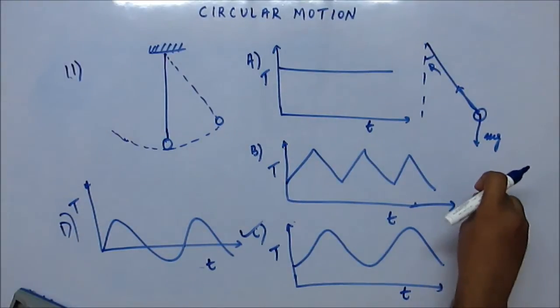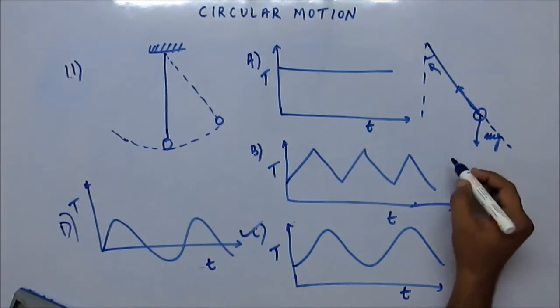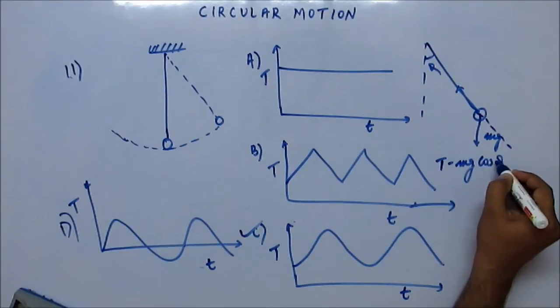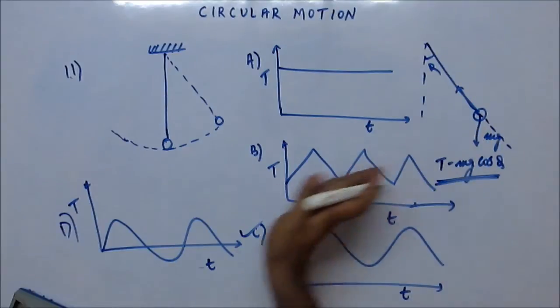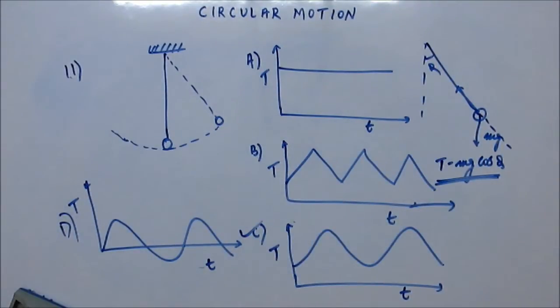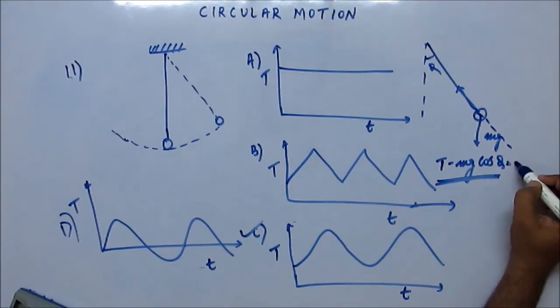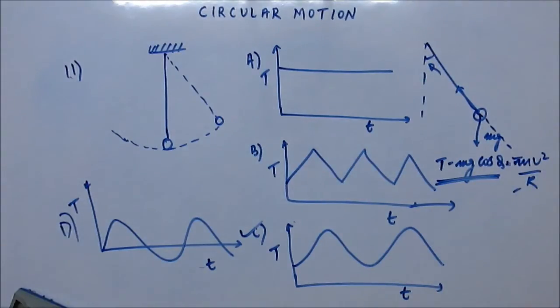The centripetal force is Mv squared upon R and the centripetal force is directing towards the center. So this tension minus Mg cos theta, this is centripetal force. And Mg sin theta is the tangential force. Now centripetal force is equal to Mv squared upon R. M and R are constant. Velocity keeps on increasing.